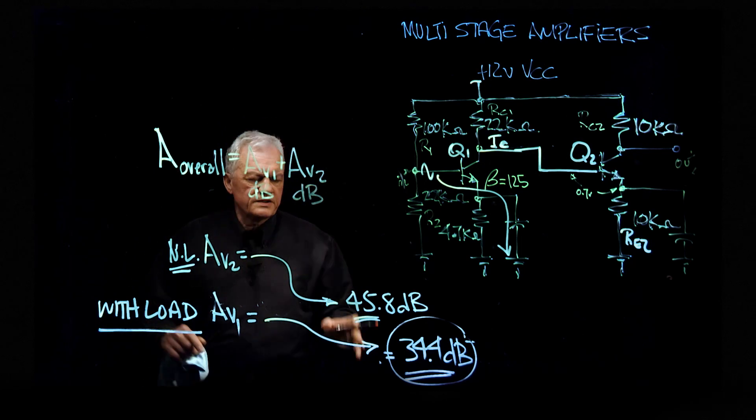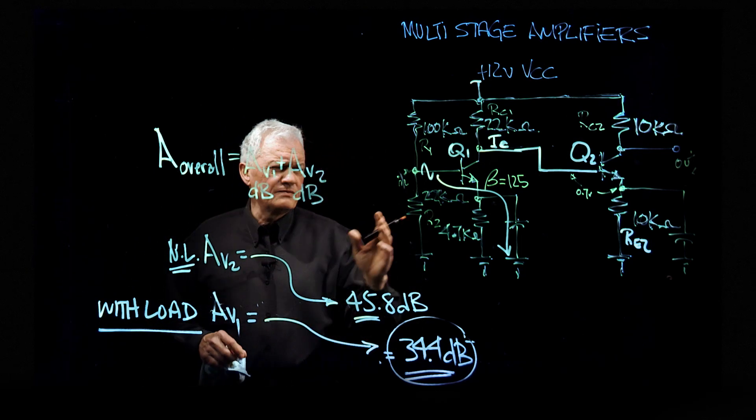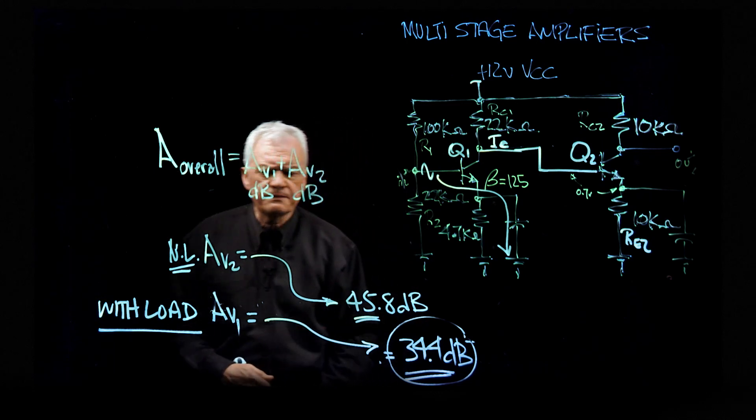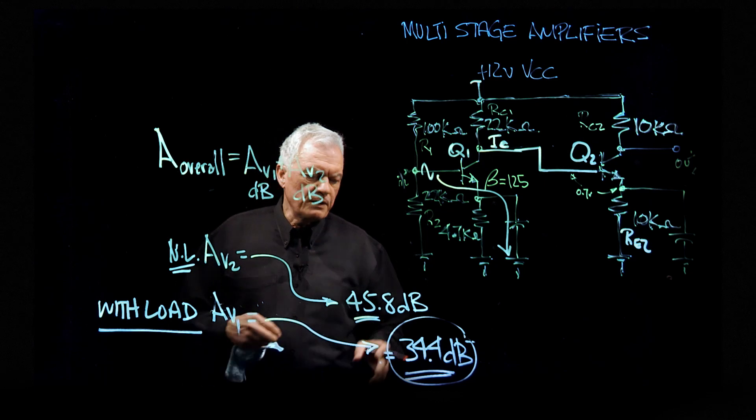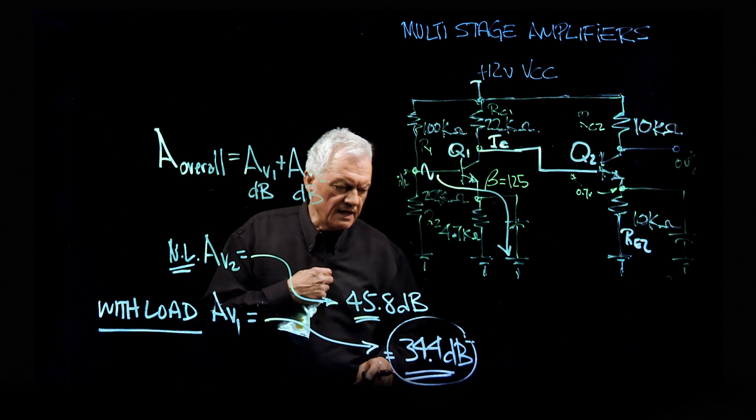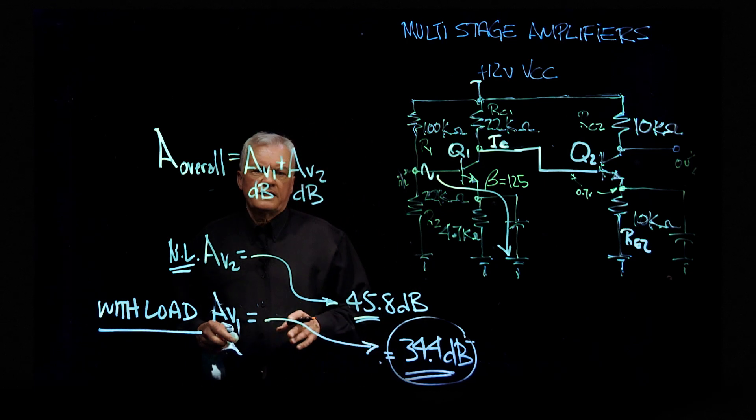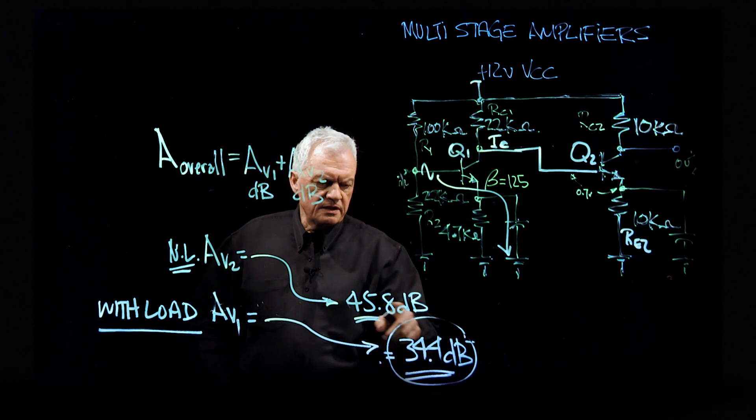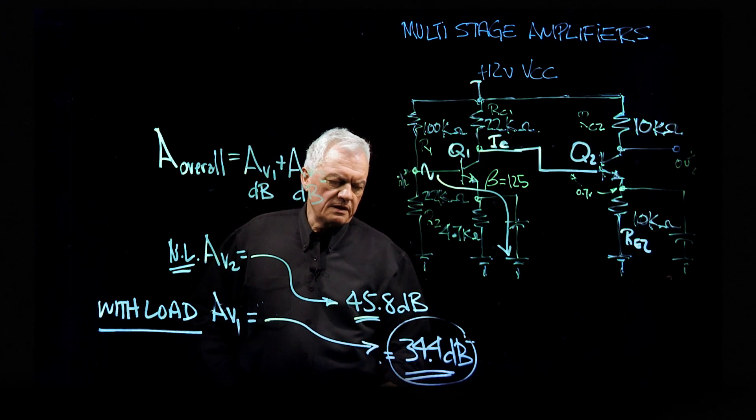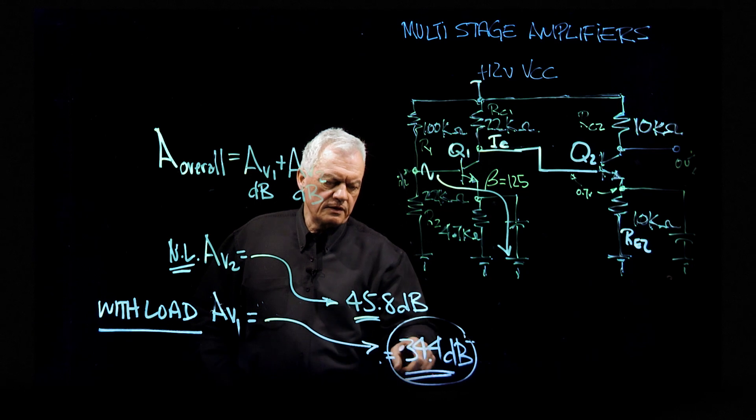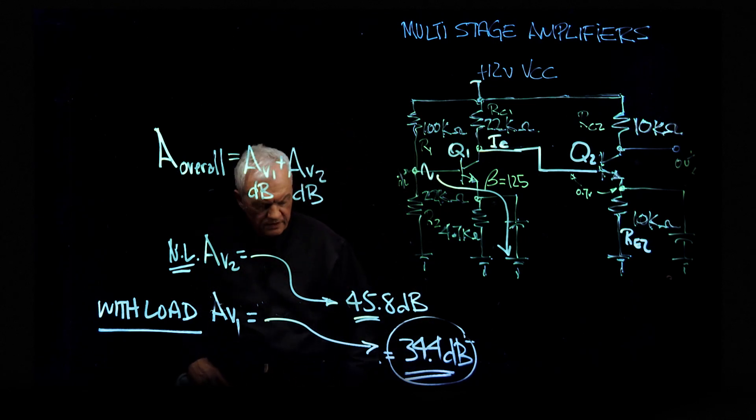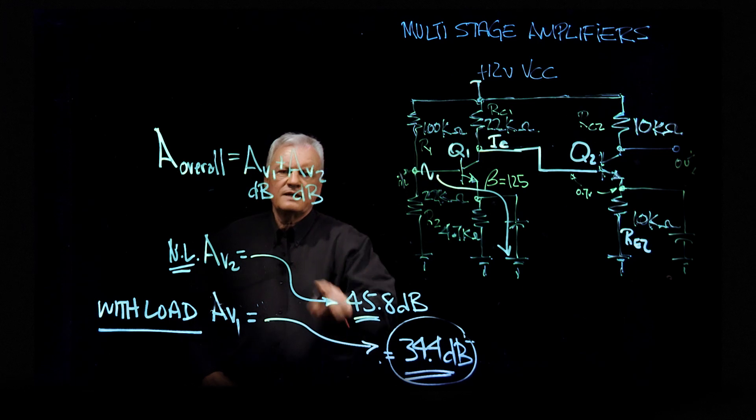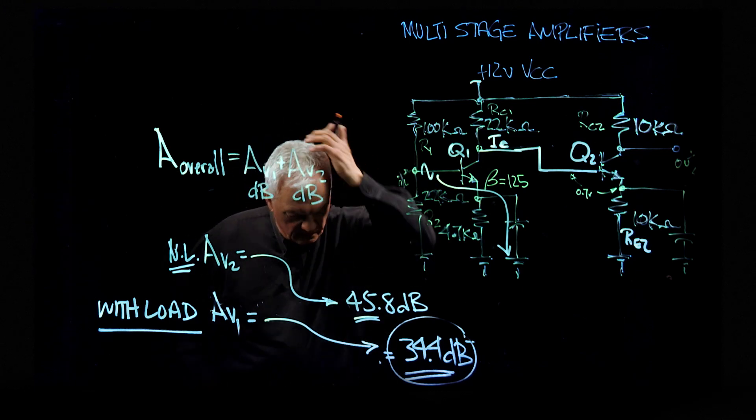If they were just the numbers that we had, the hundreds, where we had the individual gains without taking the log of it, then you would multiply the two together. But because logs are exponents, when you multiply with common bases, you just add exponents together. So the total gain then would be 45.8 plus 34.4. So you just add the two together to get the overall gain.